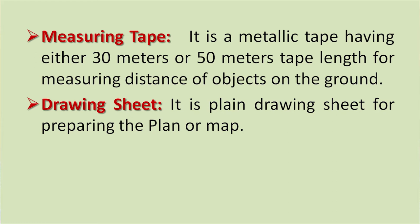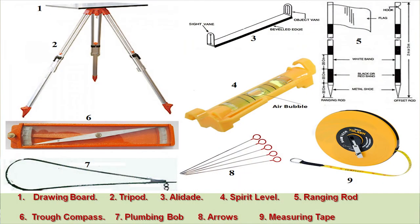And finally, the drawing sheet — a plain drawing sheet for preparing the plan or map. In this slide we have shown the different instruments used in plane table surveying: the drawing board, the tripod stand, alidade, ranging rod, spirit level, trough compass, plumbing fork or plumbing bob, arrows and measuring tape.